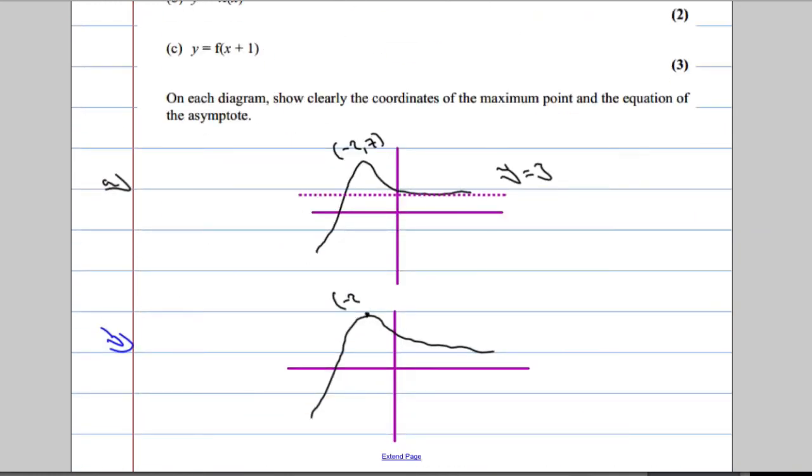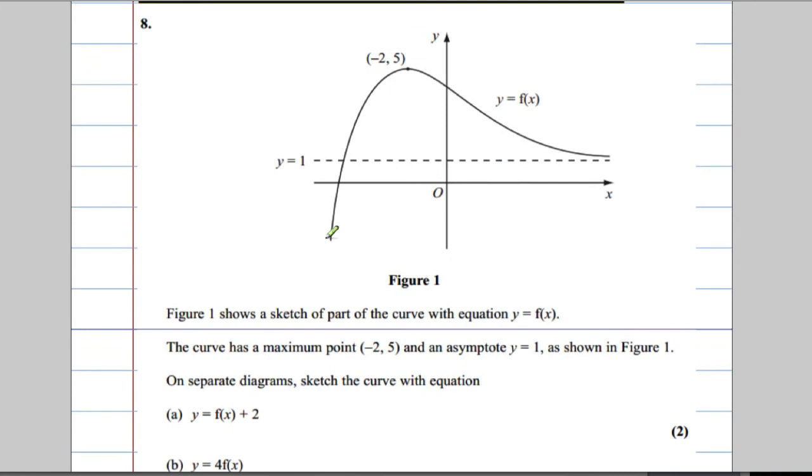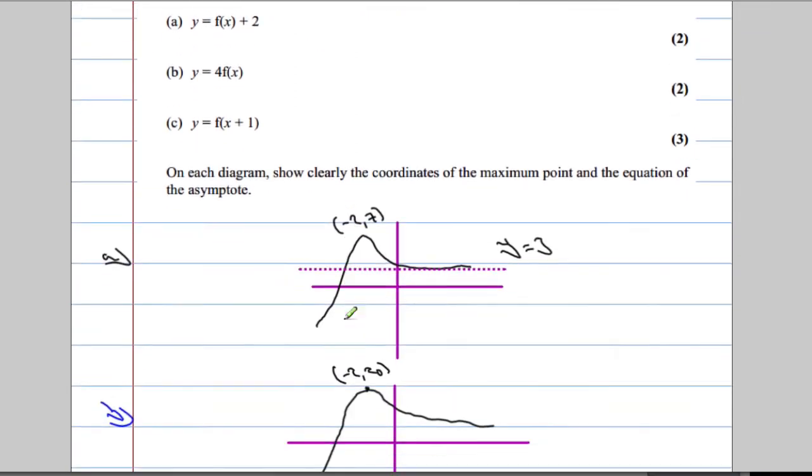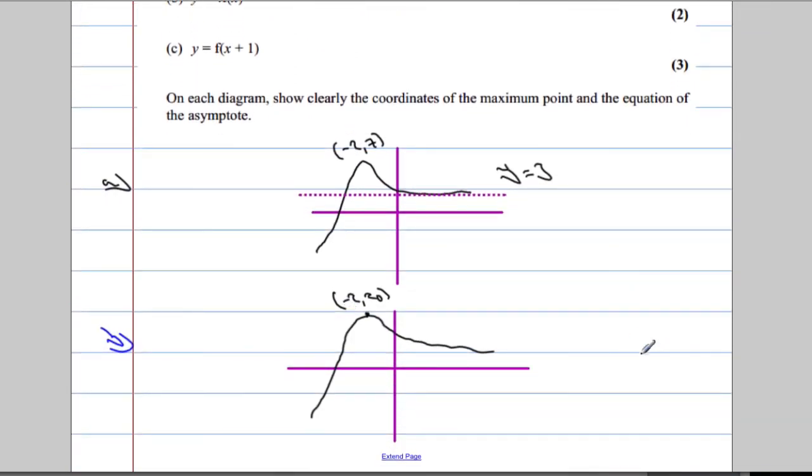So that's now negative 2, 20. And our asymptote has been scaled up by a factor of 4. Instead of y equals 1, it's now going to be y equals 4. I'm going to bring this guy down just to demonstrate it. There's our asymptote, y equals 4 now.